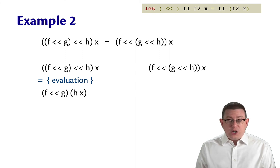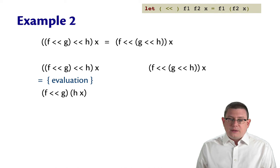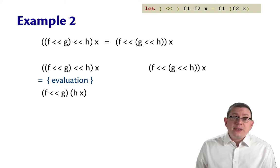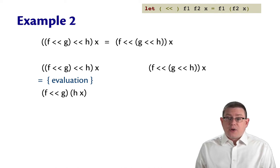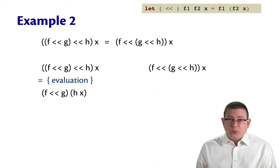So I'll start on the left here. By evaluation, I know what's going to happen if I apply that expression to x. And the reason I know that is because I have this definition of composition up here, I know that I'm going to take h and apply it to x. So h is fulfilling the role of f2 in the original definition.